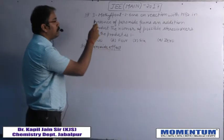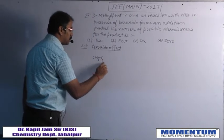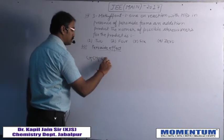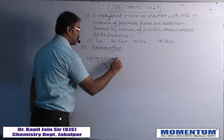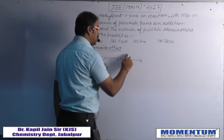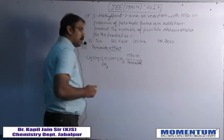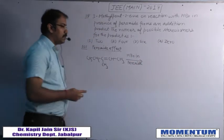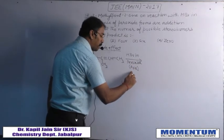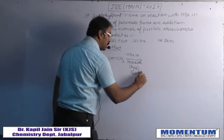The question involves 3-methylpentene treated with HBr in the presence of peroxide. This is a free radical addition reaction. In the first step, the bromine free radical is the attacking reagent.